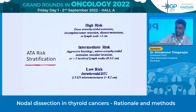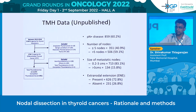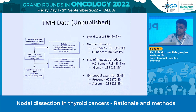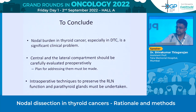In unpublished data from our institution (2012–2018, over 1000 total thyroidectomies), nodal burden exceeded 5 nodes in close to 60 percent of patients — at least intermediate risk. No cases had fewer than 0.2 cm nodes considered low risk, and extrathyroidal extension was present in up to 73 percent, which is not accounted for in current risk stratification but does influence recurrence. In conclusion, nodal burden in differentiated thyroid cancer is a significant clinical problem. Central and lateral compartments should be carefully evaluated pre-operatively, with a plan made, and intraoperative techniques to preserve the RLN and parathyroid must be undertaken.